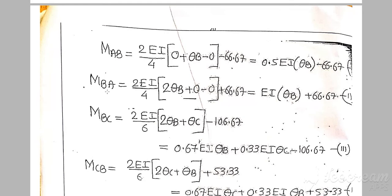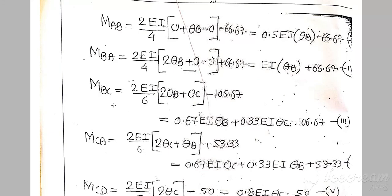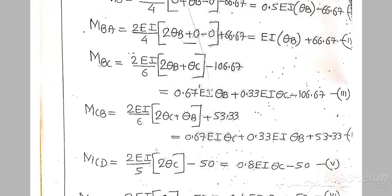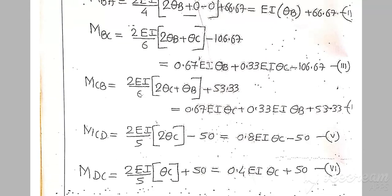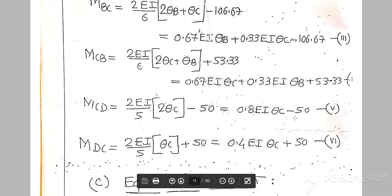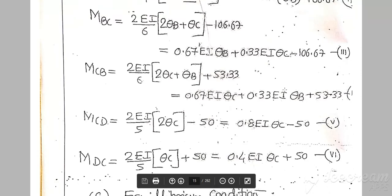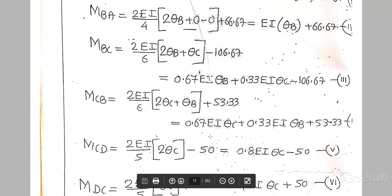Next, similarly calculate moment BA — here 2·theta_B will appear according to the formula. Then calculate moment BC, moment CB, moment CD, and moment DC. You will get these equations in terms of EI·theta_B and theta_C.